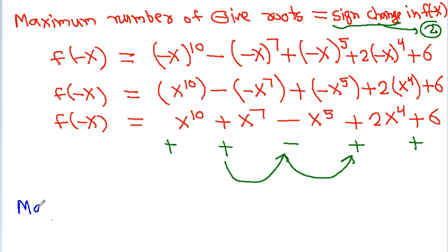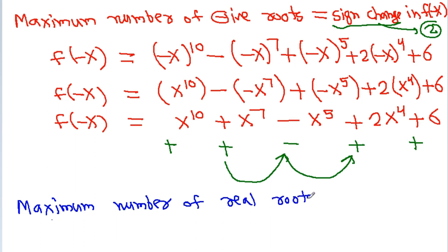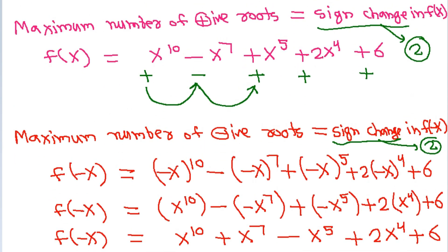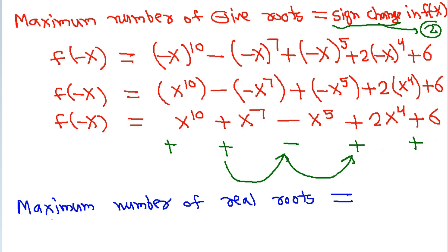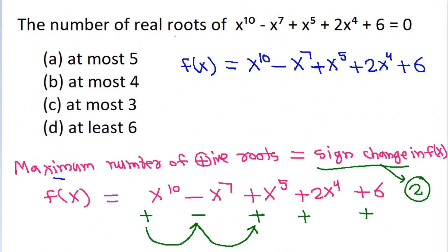So the maximum number of real roots is equal to the maximum number of positive roots plus the maximum number of negative roots, which is 2 + 2 = 4. Hence, the number of real roots is at most 4, which is option B.